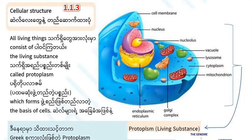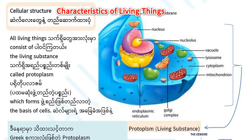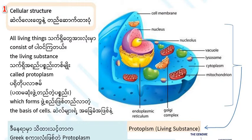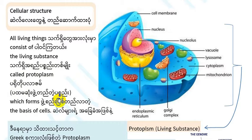Biology 1.1.3: Characteristics of living things. The first characteristic is cellular structure. All living things consist of the living substance called protoplasm, which forms the basis of cells.